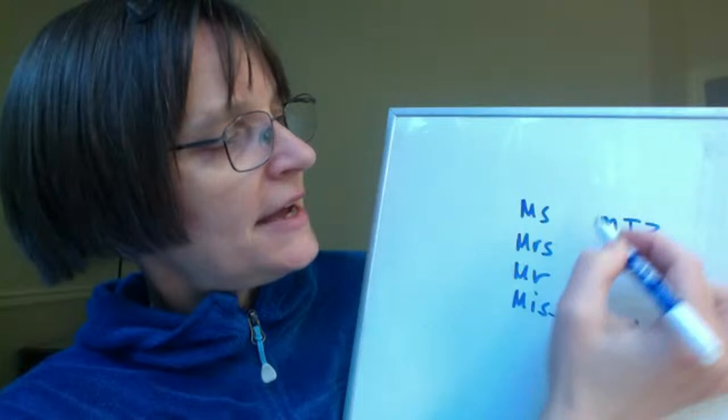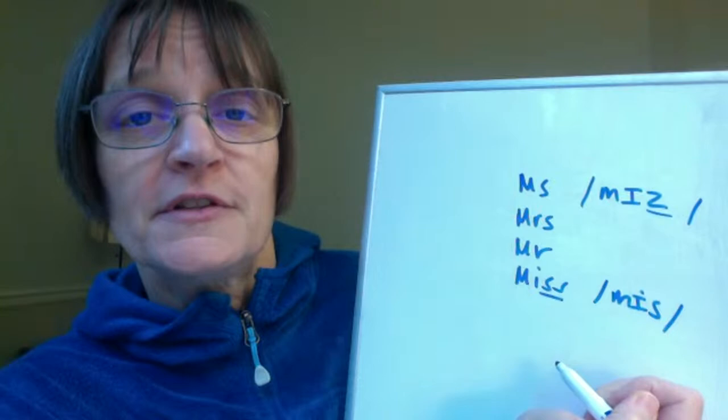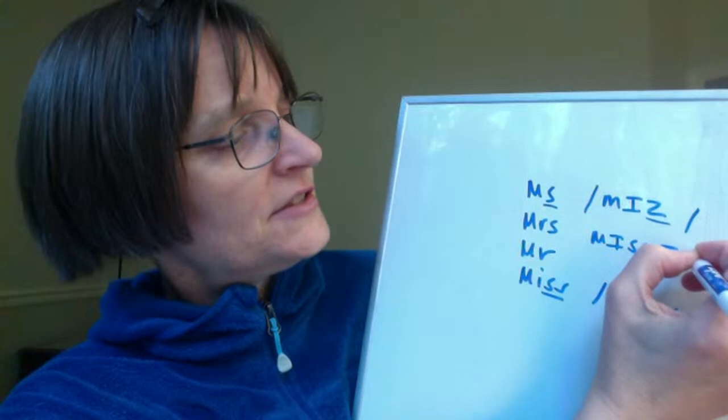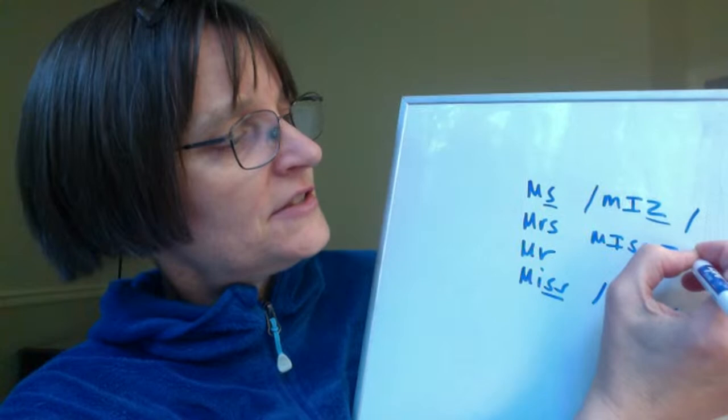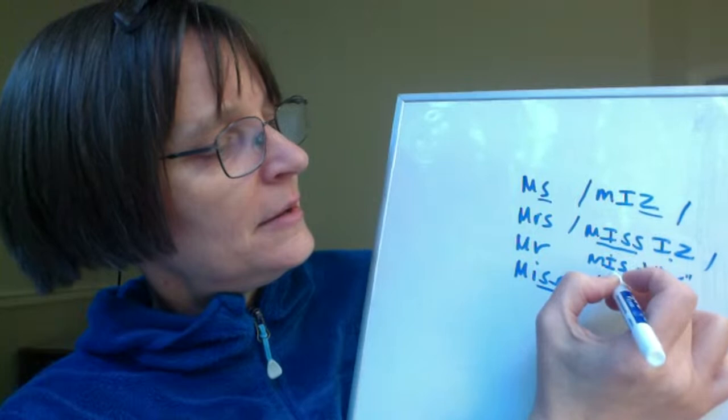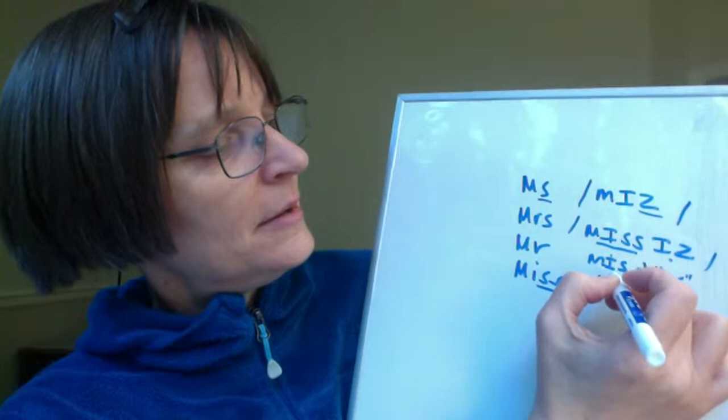'Miss' is first-syllable stress. And 'Mr.' — the S sound: 'miss' — then going right into the UR vowel: 'Mr.' Also first-syllable stress. So: 'miz,' 'Mrs.,' 'Mr.,' 'Miss.' Great question, thank you.